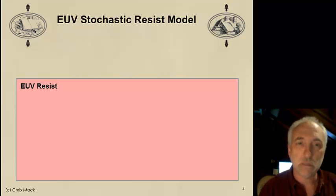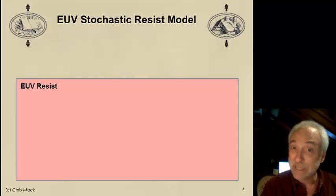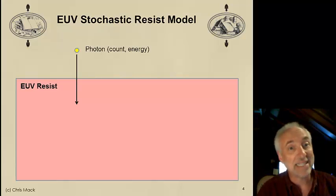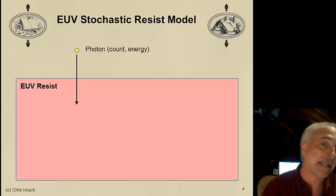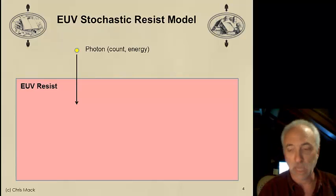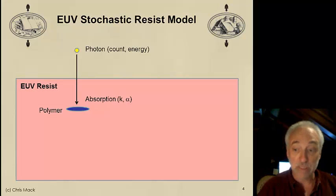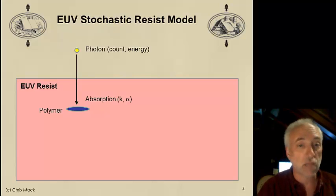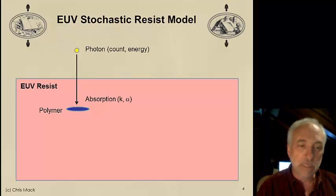Let me briefly mention the difference between a 193 nm resist and an EUV resist. EUV is exposed at a wavelength of 13.5 nanometers, and at that wavelength the photons have much higher energy — about 92 eV, much more than a 193 nm photon. That higher energy means a different kind of chemical reaction: when an EUV photon is absorbed, it's absorbed by the polymer, not by the PAG. The energy is much higher than the ionization potential of the polymer, and an EUV photon — unlike a 193 nm photon — can ionize the polymer.